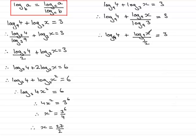Now, if I multiply top and bottom of this fraction by 2, I then get that the log of 4 in base 9 plus 2 log of x in base 9 equals 3.